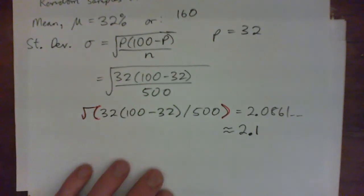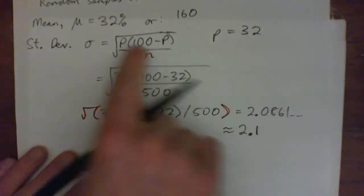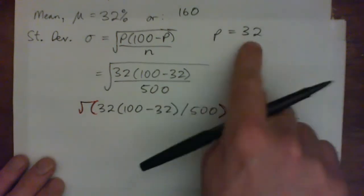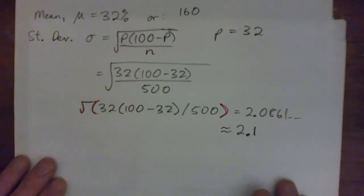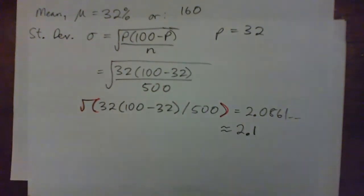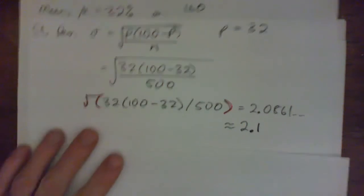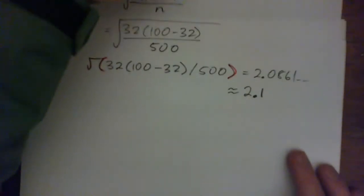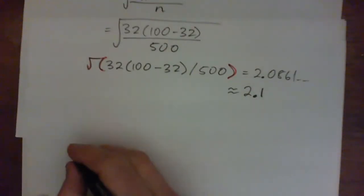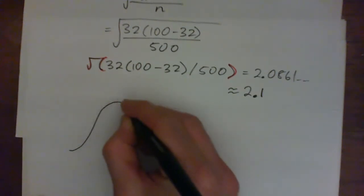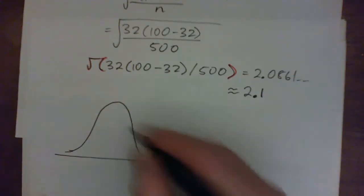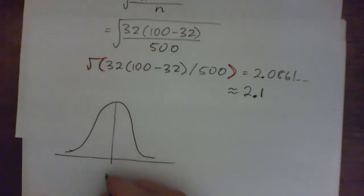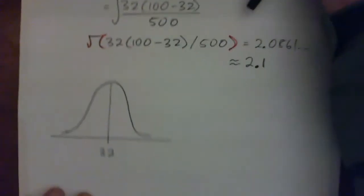You all okay with that? So in other words, our mean, when we're using this formula, we're just talking about percentages. So our mean is 32% and our standard deviation is 2.1. So what I'd like folks to do is to just draw up our little normal distribution here, just a little bell curve.